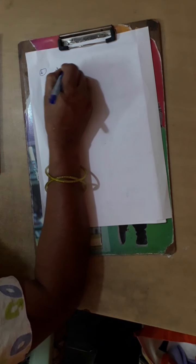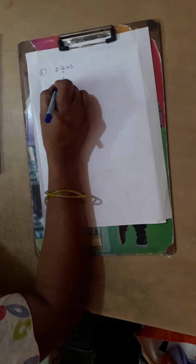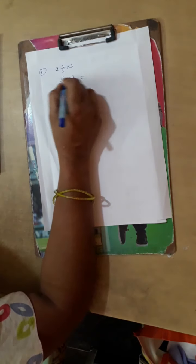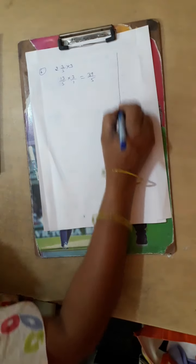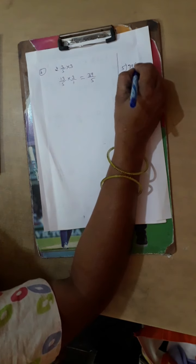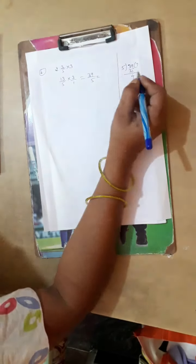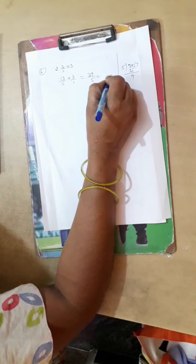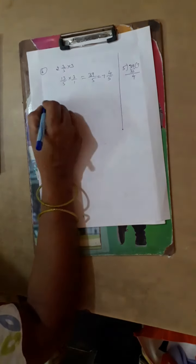That is 2 3 by 5 into 3. 5 times 2 is 10, 10 plus 3 is 13 by 5 into 3. So here also we cannot cancel anything. Then just multiply: 13 times 3 is 39 divided by 5. So let us divide this 39 divided by 5. So 5 times 7 is 35, 9 minus 5 is 4. So write 5 as it is, then 7, the remainder will come upside, that is in the numerator.